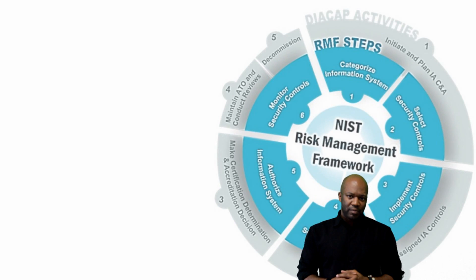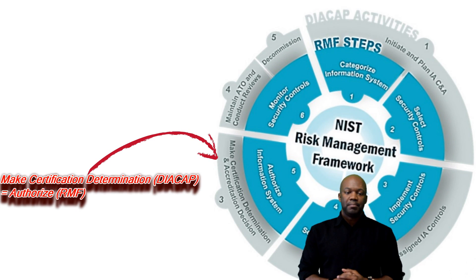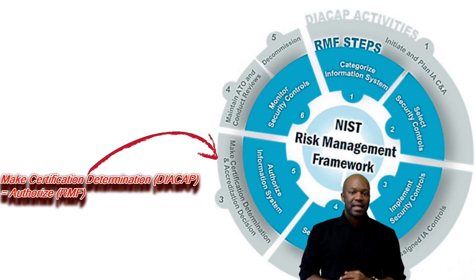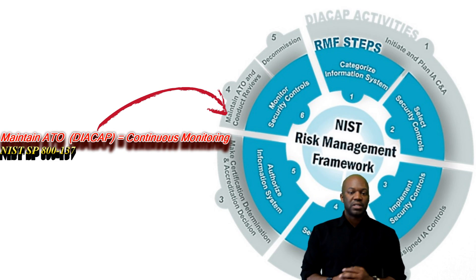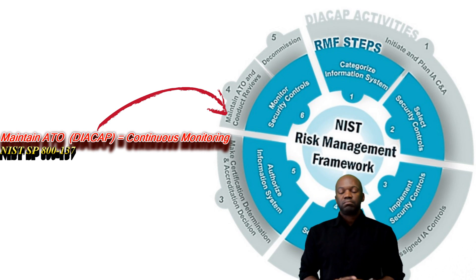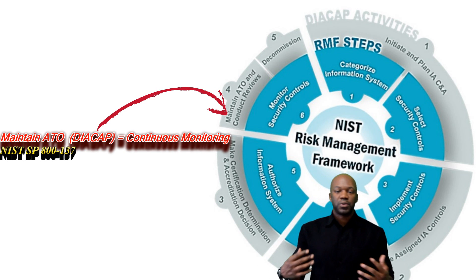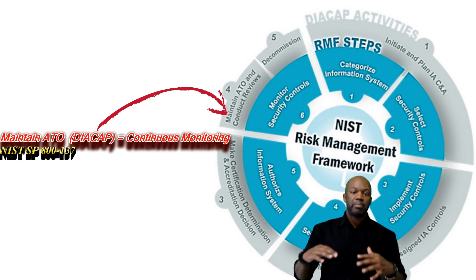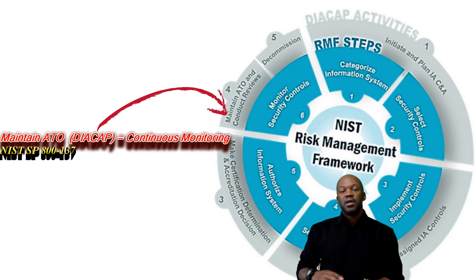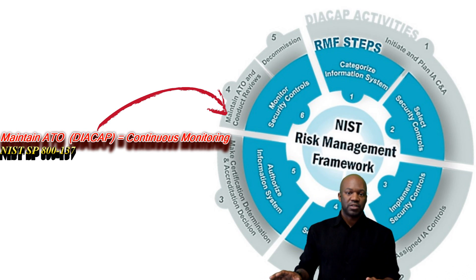Going back to DICAP step three — make certification determination and accreditation decision — this links up with authorization in the Risk Management Framework. Looking at maintain authorization in DICAP, you'll see that this links directly up with monitoring, continuous monitoring of controls. It's really the same stuff — just making sure that your system maintains a certain security posture. That's the same with DOD Risk Management Framework and with regular plain vanilla Risk Management Framework for normal federal systems.